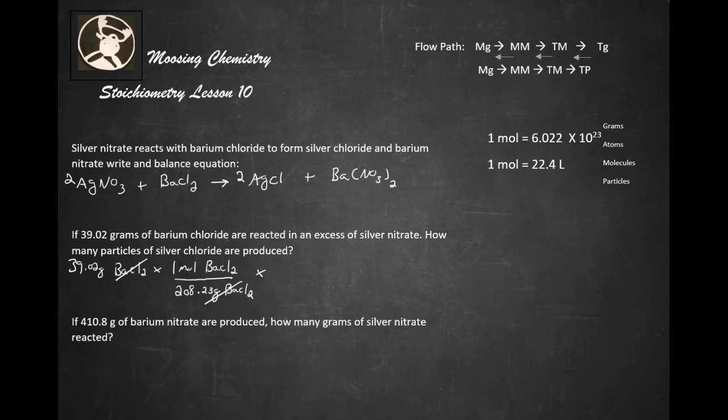Then we want to change this into moles of silver nitrate before hitting particles. So what is the relationship? Well, we've got one mole of barium chloride to two moles of silver chloride.